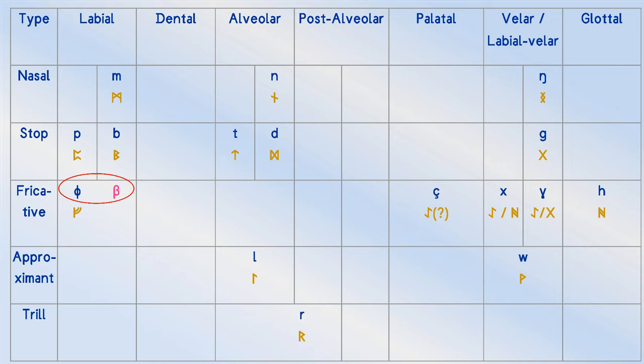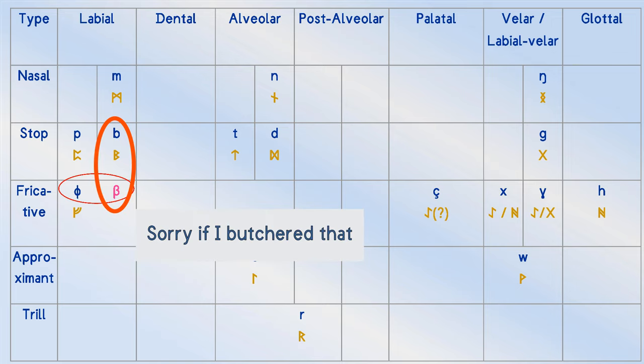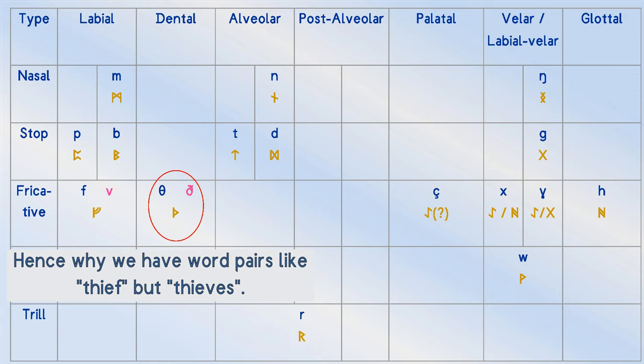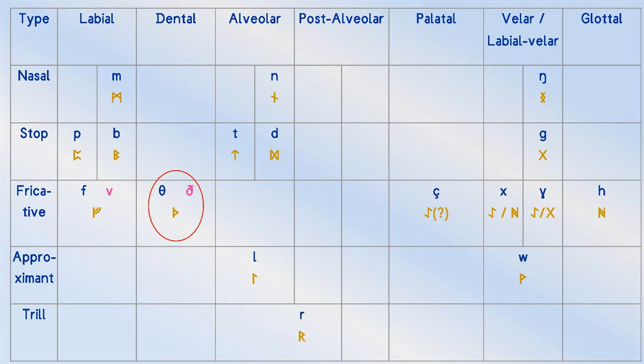With the shift from Proto-Germanic to Old English, these bilabials became labials, giving us the F and V sounds. But whereas Proto-Germanic treated V as an allophone of B, Old English considered V an allophone of F. Consequently, the rune Feo was used for both.